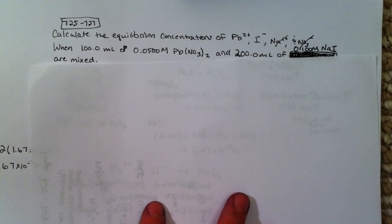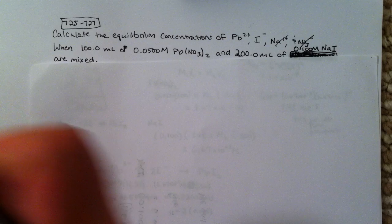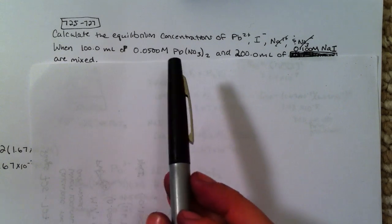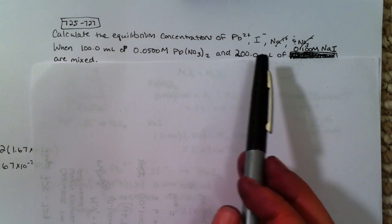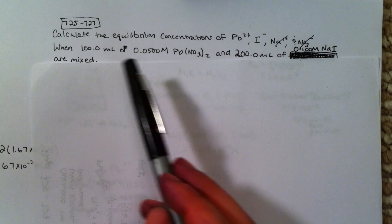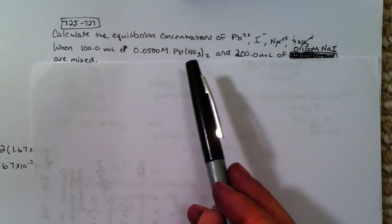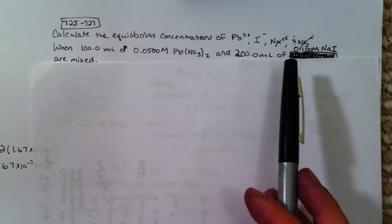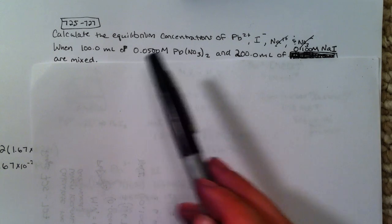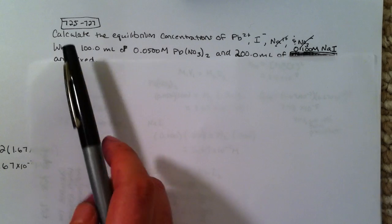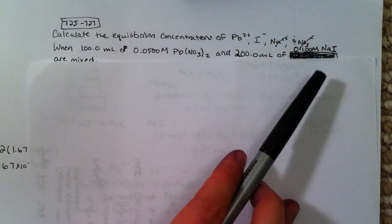Okay, we have our last type of equilibrium problem for this unit. We're asked to calculate the equilibrium concentrations of all four ions when 100 milliliters of 0.05 molar lead nitrate and 200 milliliters of 0.1 molar sodium iodine are mixed. We're on pages 725 to 727 in your book.